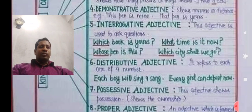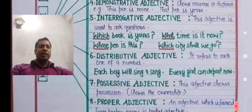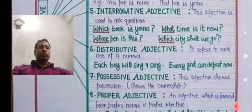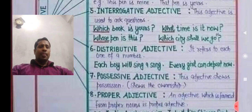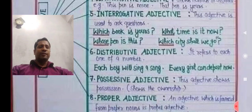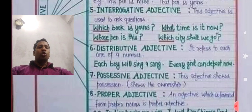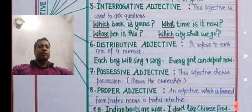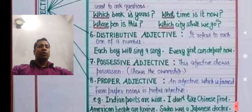Interrogative adjective is used to ask a question and it mentions a noun. For example: 'Whose book is yours?' — 'whose' is a WH-word that describes 'book,' so 'whose' is an interrogative adjective because it is used in an interrogative sentence. Similarly, 'Whose pain is this?' — 'whose' modifies 'pain,' so 'whose' is an interrogative adjective.